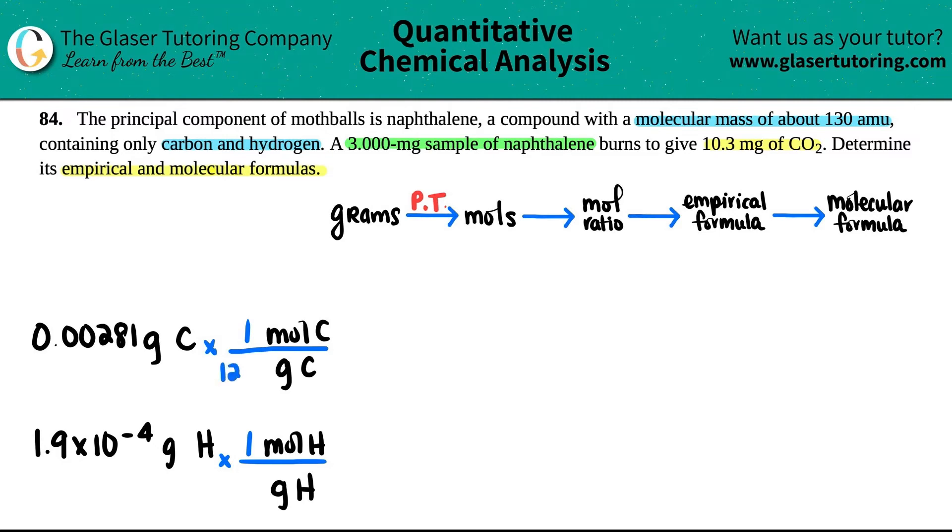What are going to be the numbers? Well, it's going to be the periodic table. And remember, if you're using the periodic table, it's always one mole. So one mole of carbon and one mole of hydrogen. On the periodic table, carbon is 12.01 and hydrogen is 1.008, but it's basically one. Grams cancels out. And now let's get the two mole values. I got 0.00281 divided by 12.01. So I get 2.3397 times 10 to the negative 4th, mole of C. And then I get 1.9 times 10 to the negative 4th divided by 1.008. I get 1.885 times 10 to the negative 4, mole of H.